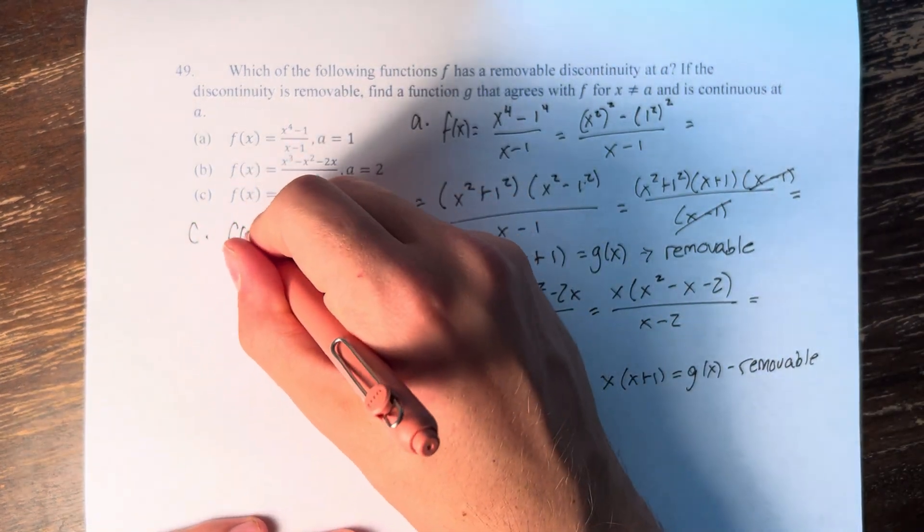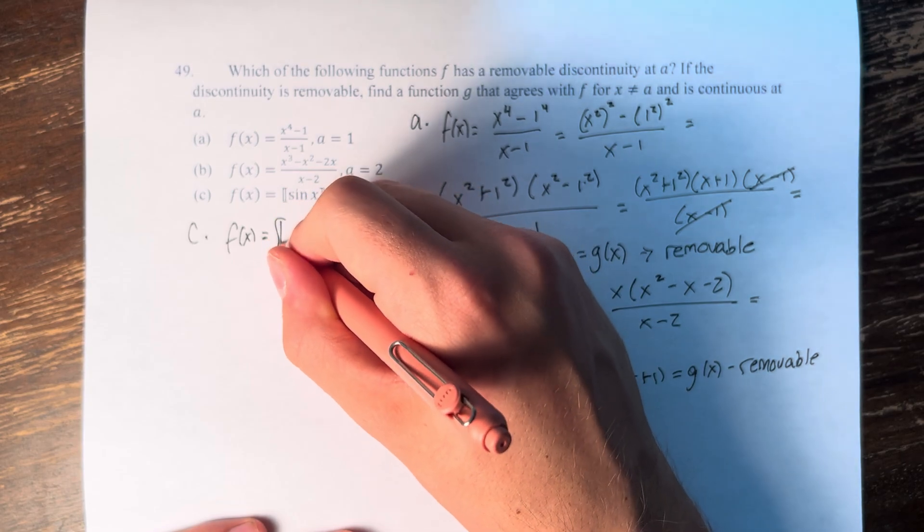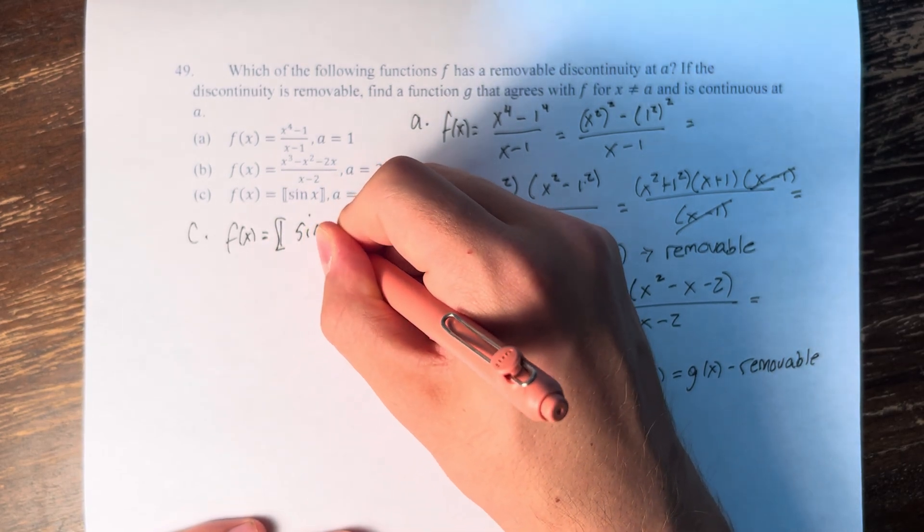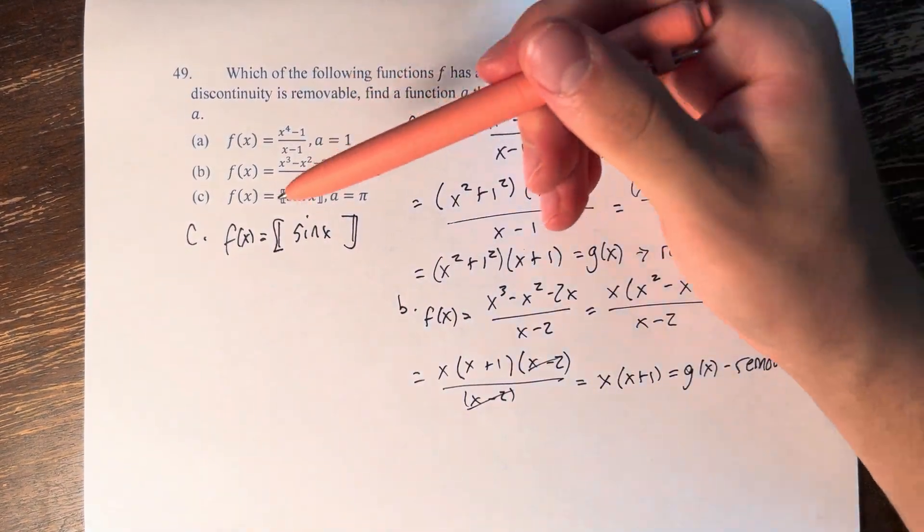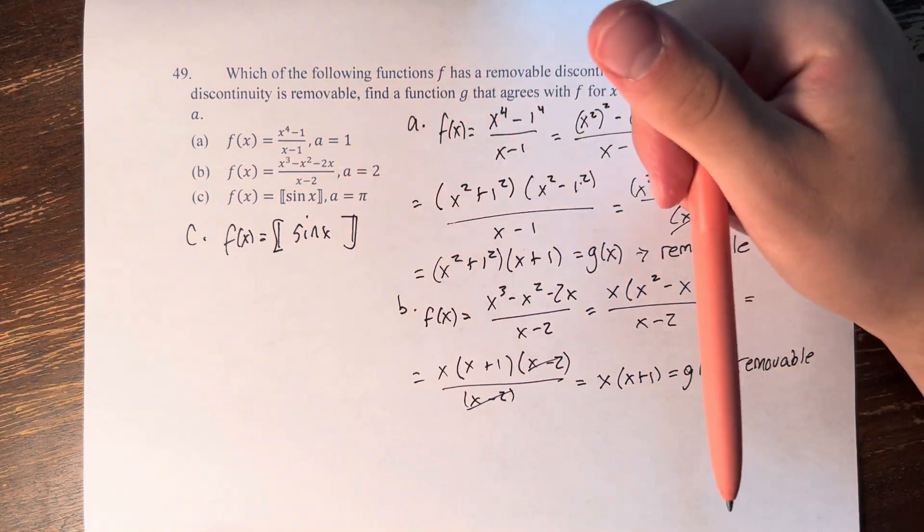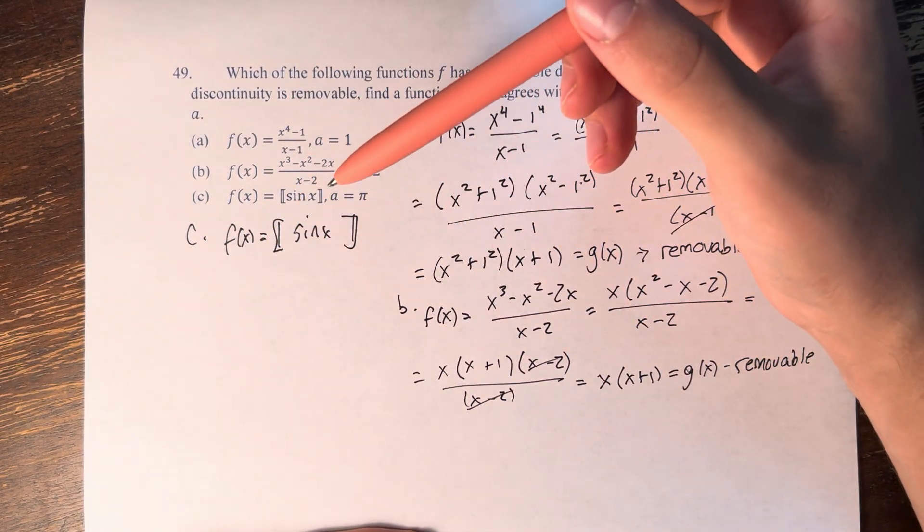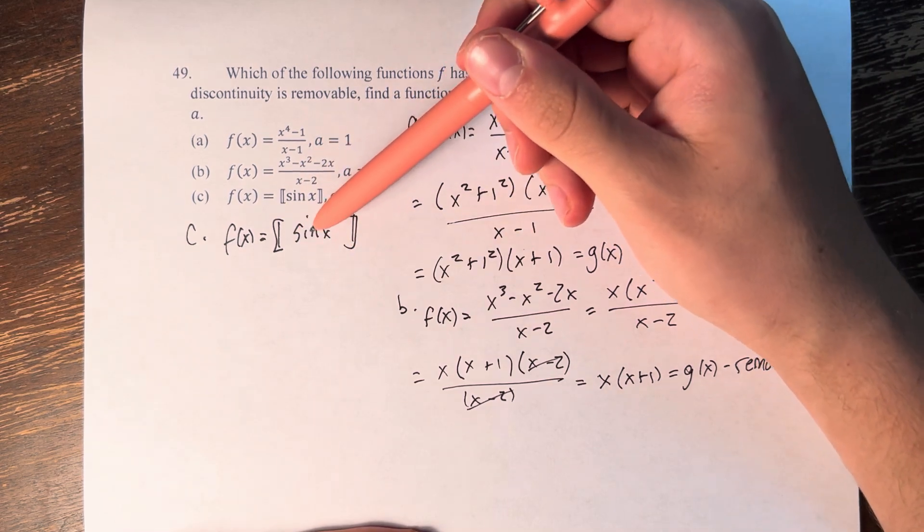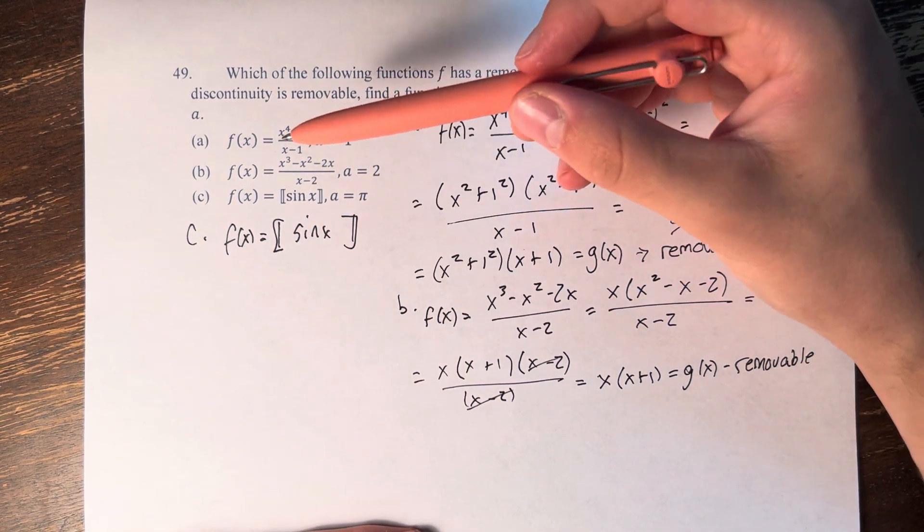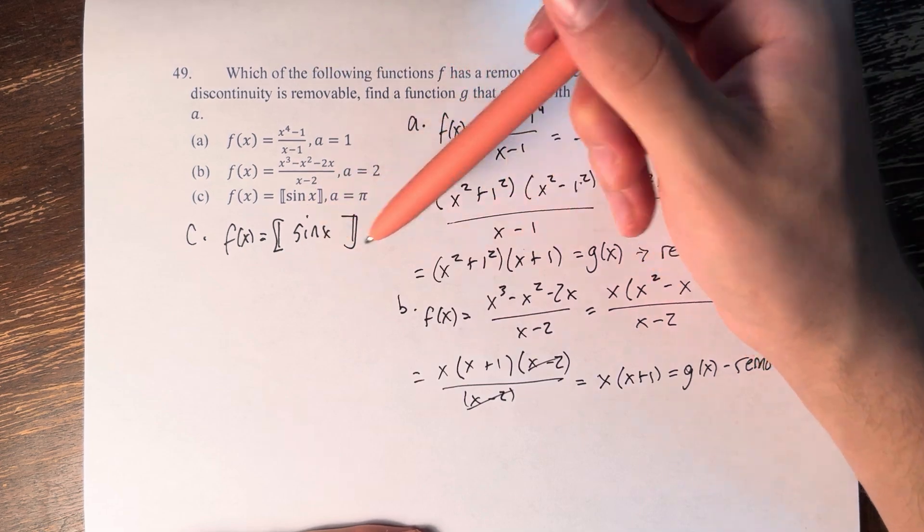In C, we have f of x is equal to sine of x in these brackets. What does that mean? Well, these brackets denote the greatest integer function, which states that the value of this function, you take the sine at a certain point, and then you say, what is the greatest integer that is less than or equal to that value?